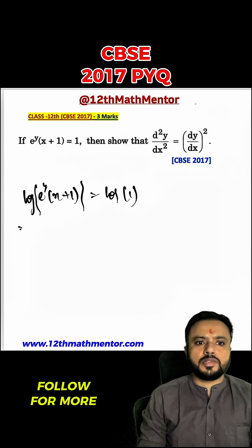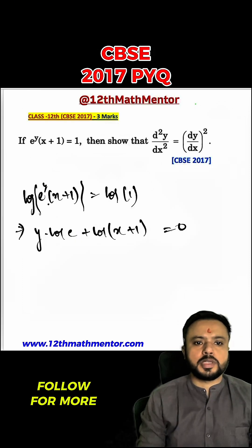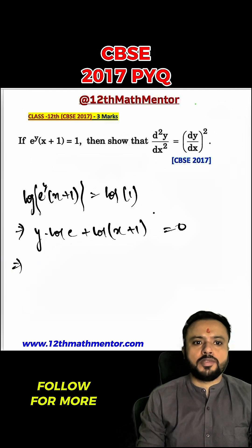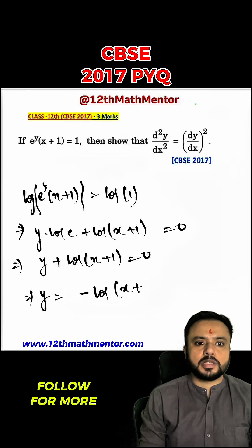To solve this, I will take log on both sides. Using logarithmic properties, I get y into log e plus log of (x plus 1) equals 0. Since log e equals 1 and log 1 equals 0, this simplifies to y plus log(x plus 1) equals 0, which means y equals negative log(x plus 1).